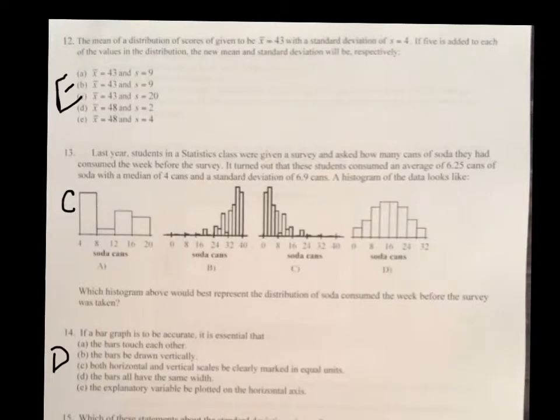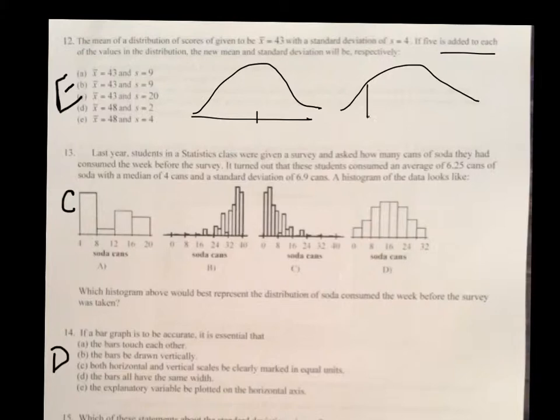On number 12, we're talking about adding five to each value. Well, what happens is, when you have this right here, whenever you add five, you're simply taking all your values and adding five to it. So, it's not going to change the shape, you're still going to have all the values, they're just going to move to the right five. So, you're going to have the same spread, it's just the average is going to be higher. So, that's why the answer choice is E.